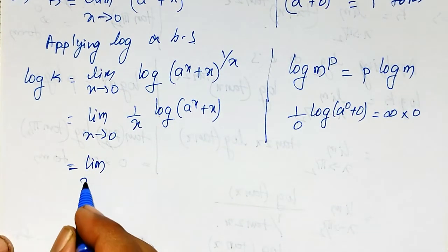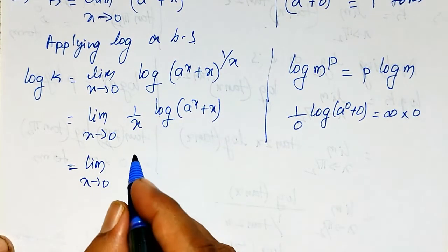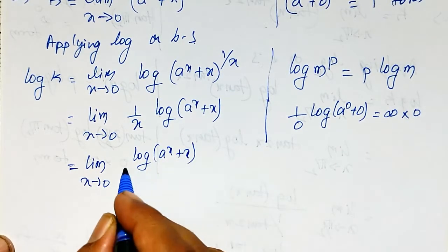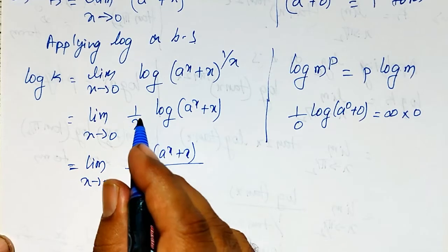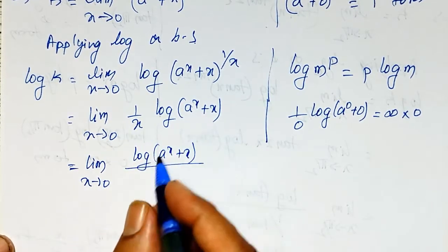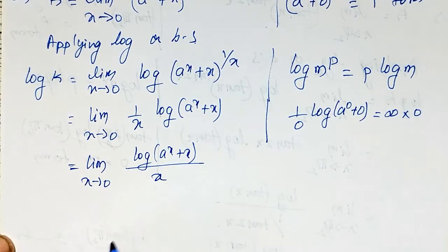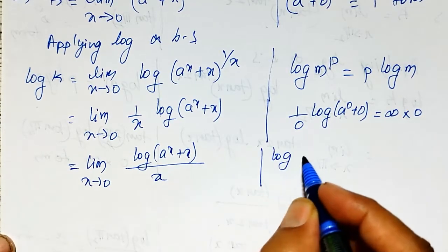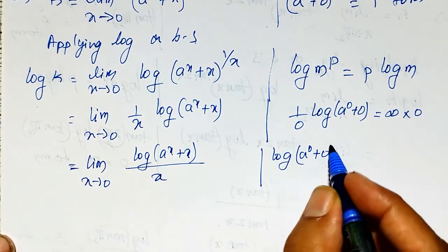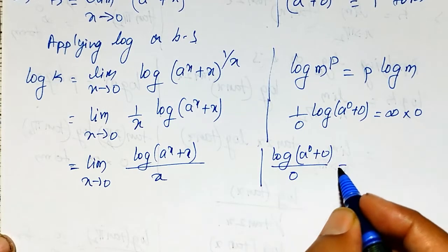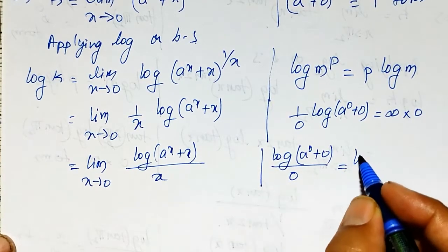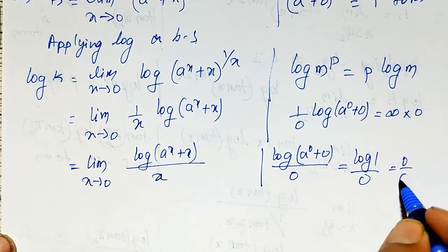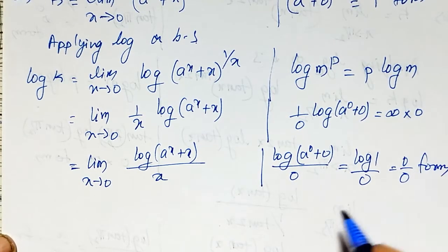I rewrite this as the limit as x tends to 0 of log of (a raised to x plus x) whole divided by x — instead of multiplying by 1 by x, I take it as divided by x. Now checking: log of (a raised to 0 plus 0) divided by 0 gives log 1 divided by 0, which is 0 by 0 form.